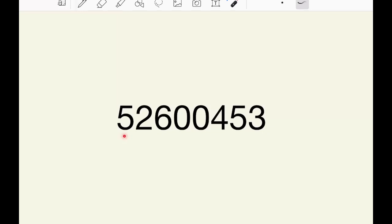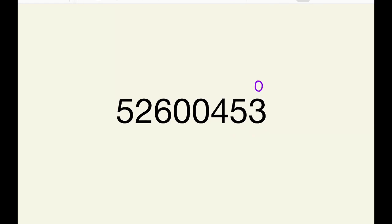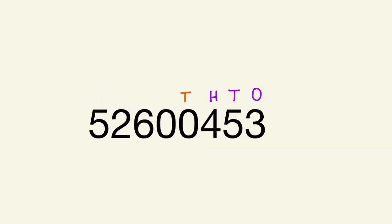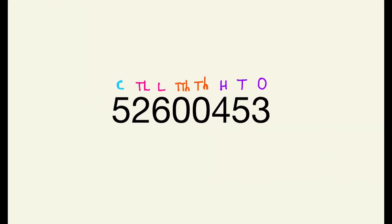Let us do a few more examples. Consider the number 52600453. The last digit is 3 and it is in the ones place. 5 is in tens place, 4 is in hundreds place, 0 is in thousands place, the next 0 is in ten thousands place, 6 is in lakhs place, 2 is in ten lakhs place, 5 is in crores place. The first comma is after hundreds place, the second comma is after ten thousands place, and the third comma is after ten lakhs place.